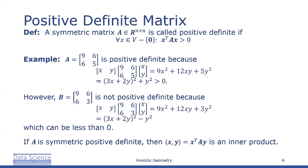On the other hand, the matrix [9, 6; 6, 3], which again is symmetric, is not positive definite. We again multiply by x transpose and x and get 9x^2 + 12xy + 3y^2, which factors to (3x + 2y)^2 - y^2. This can be less than zero if we pick a value of y that's large enough.